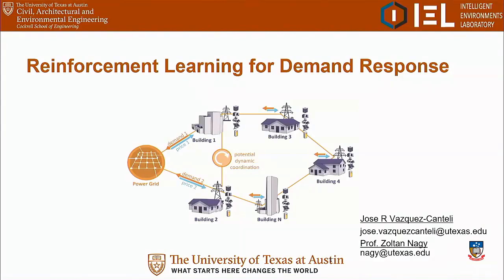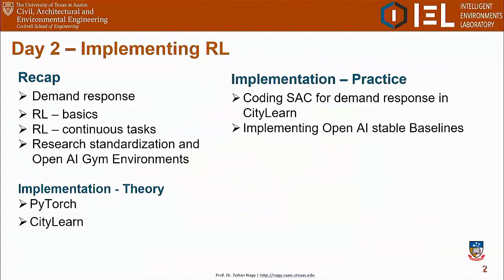Welcome everyone. Today we will continue our discussion on reinforcement learning for demand response. First I'm going to do a recap on everything we discussed yesterday regarding demand response and why we can use reinforcement learning to solve problems in demand response, and also standardization using OpenAI environments. Then I will discuss more about the actual implementation using PyTorch, CityLearn, and also the OpenAI stable baselines. And then we will do some practice on running some simple algorithms and trying different hyperparameters.